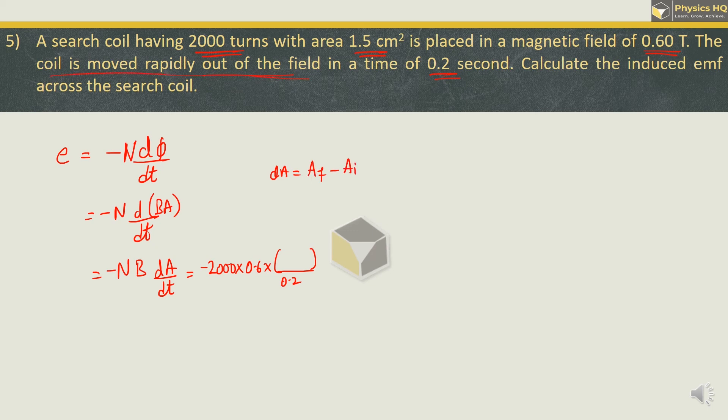And then we have to find out the change in area. So this change in area is final area minus initial area. Now we know that coil is moved out of the field. So the area which is left inside the field will be 0. So the final area is 0. And initially the area which was inside the field was 1.5 cm². So here if we write it in meters it will be 1.5 into 10 raise to minus 4. So let us solve this. Minus minus will go out. This will be 2 threes are 6. And we got this as 6000 into 1.5 into 10 raise to minus 4. So we got 9 into 10 raise to minus 1, which is 0.9 volts.